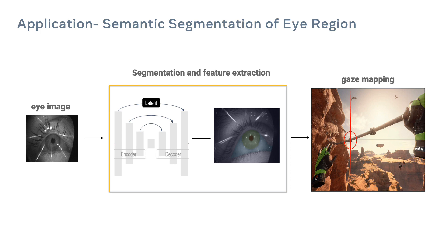In order to see an example of the utility of the dataset for the eye tracking problem, let us consider the application of semantic segmentation of eye regions. Let us look at a cartoon schema for video-based eye tracking that uses a feature-based detection methodology. In this cartoon summary, we emphasize the critical middle step where the eye image is segmented and features critical to gaze estimation are extracted from that segmentation. Segmentation is typically accomplished using computer vision or pre-trained neural networks.